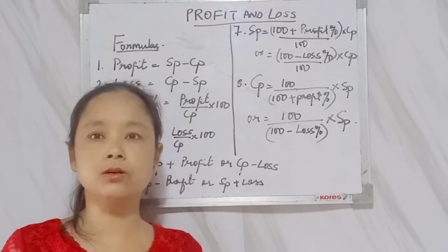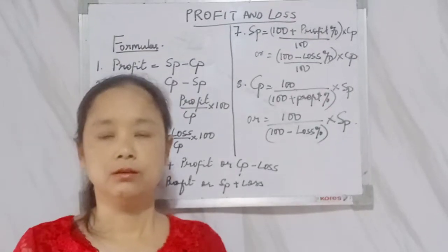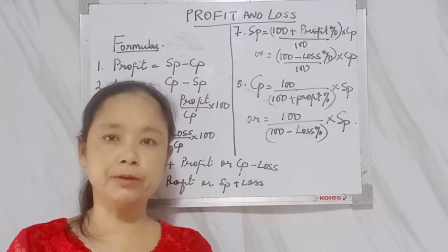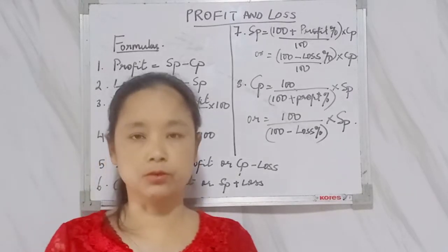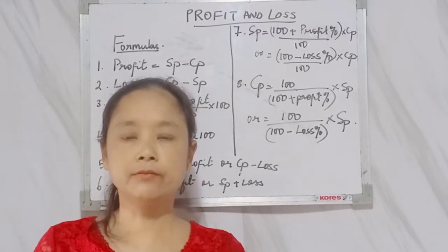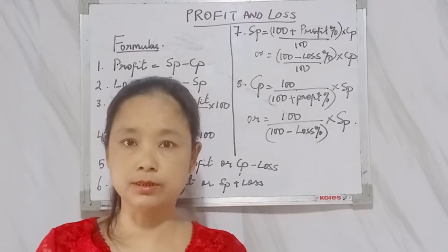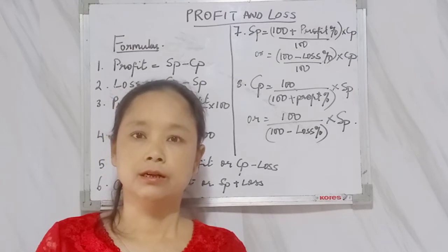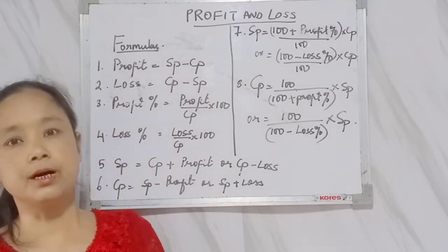In our daily life, profit and loss plays a very important part. When you go to the shop and buy something, you give money, and shopkeepers earn profit by selling goods. Whenever you are selling, you don't want to make a loss. In order to make profit, you will have to sell any article for more than the cost price.